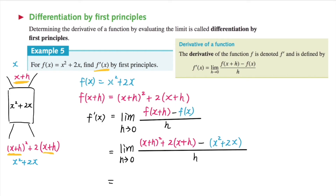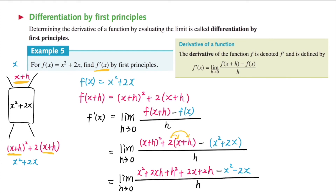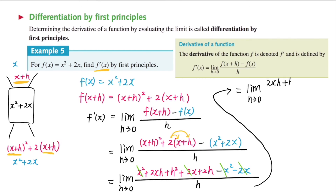Now let's expand the brackets and simplify. This equals x squared plus two xh plus h squared, plus using distributive law two times x plus two times h, which is two x plus two h, take away x squared minus two x, all over h. This is nice because x squared minus x squared cancels, and plus two x minus two x also cancels. We're left with two xh plus h squared plus two h over h. Clearly h is a common factor, so dividing through by h gives us two x plus h plus two.